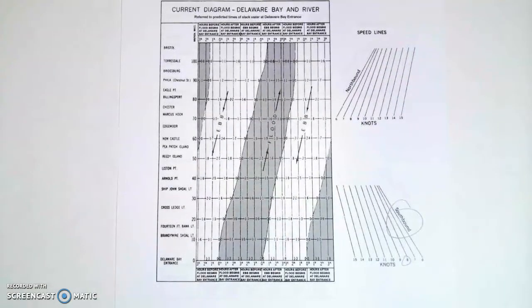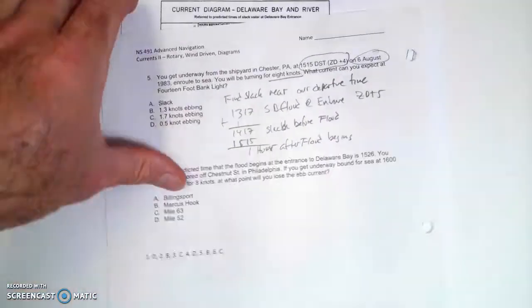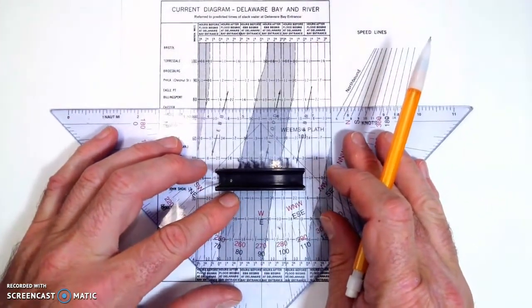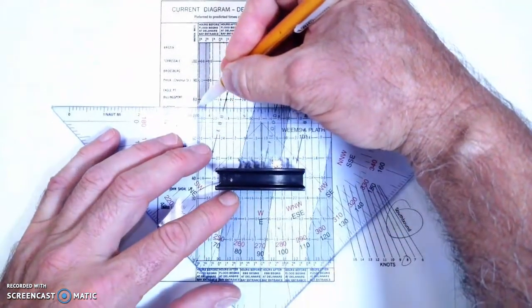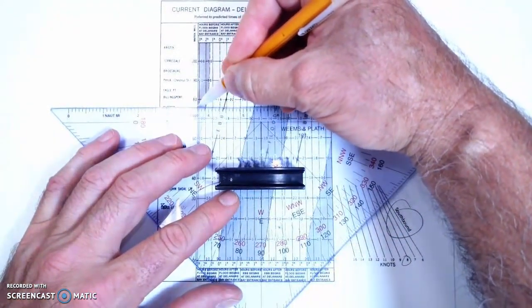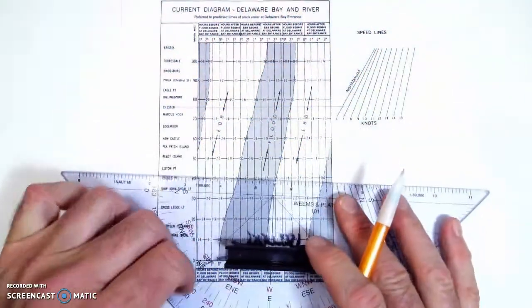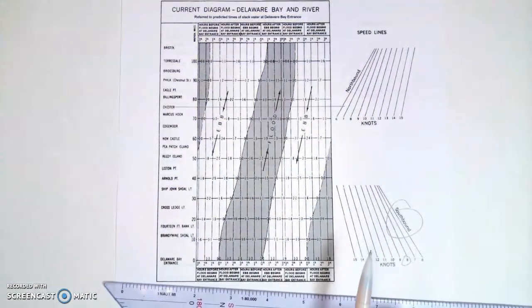So now what I need to do is find a couple of things. We're leaving from Chester, so I'm going to take my triangle and find Chester. Here we are. I'm going to put my pencil right basically here. There's Chester and I'm going to get my triangle nice and perpendicular there. So there's the Chester line. Now I'm going to be leaving about one hour after the flood.